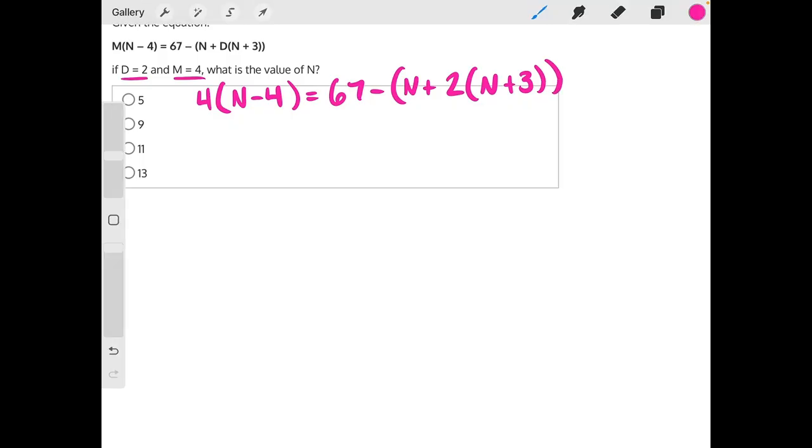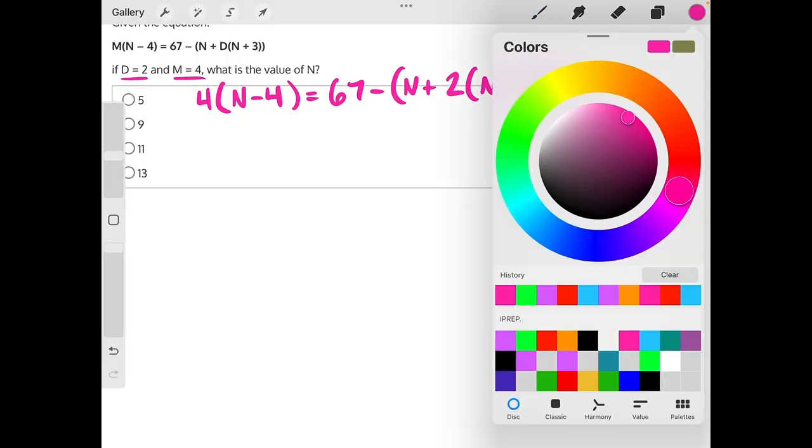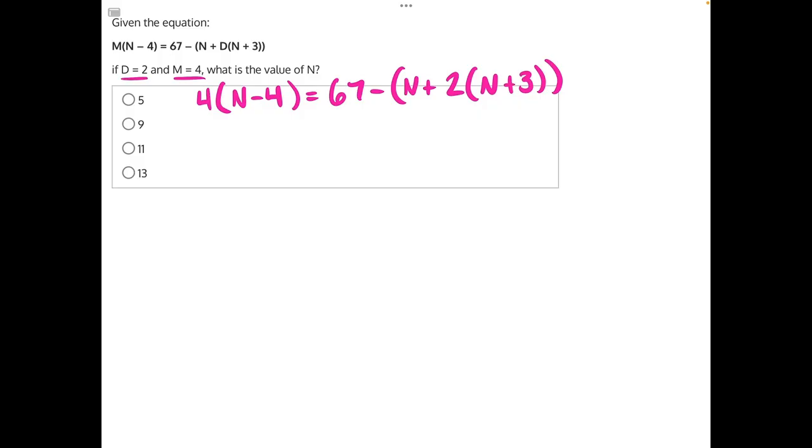And now that we've written all that out, we can start to simplify. Starting with our parentheses, we need to simplify everything in these two sets of parentheses. Over here on the left-hand side, we just need to do distributive properties, so we can start there. 4 times n will give us 4n, and 4 times negative 4 will give us negative 16.